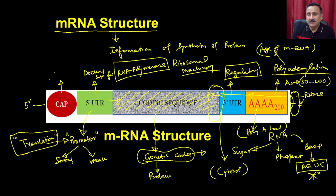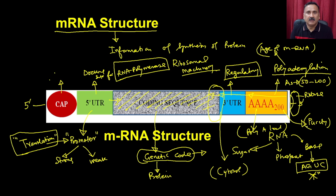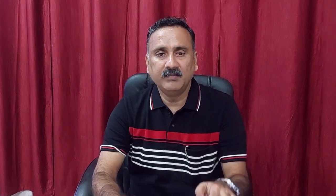The poly-A tail is a very interesting tool because it also provides stability to the messenger RNA. On the other hand, it can also be used as a tool to purify messenger RNA from the cytosol using an affinity column. There are two methods by which we can isolate messenger RNA: one using the affinity oligo-dT column, and the other using the trizole method.